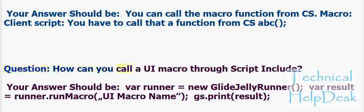How can you call a UI macro through script include? var runner = new GlideJellyRunner(); var result = runner.runMacro('UI macro name'); gs.print(result).